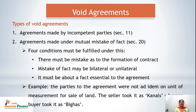There are various types of Void Agreements, which we will read in the further slides. The first type is agreements made by incompetent parties, covered under Section 11 of the Indian Contract Act 1872. Under Section 11, all agreements made by incompetent parties are known as Void Agreements.